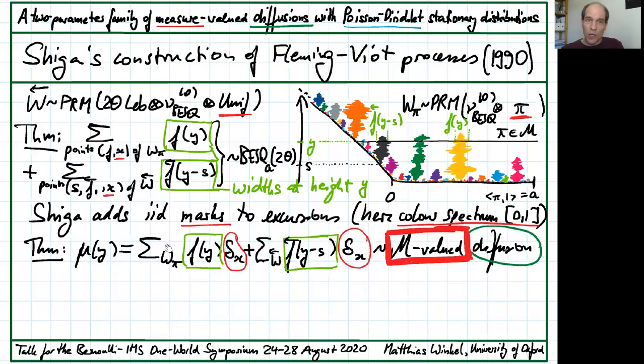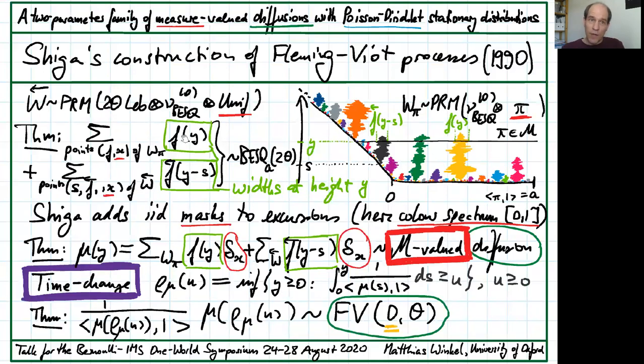Shiga records this extra structure in a measure-valued process by using the spindle widths as atom sizes and the color marks as atom locations. What he obtains is a measure-valued branching diffusion. Its total mass fluctuates according to Pitman-Yor squared Bessel processes constructed from those same excursions. To obtain the Fleming-Viot process, Shiga first introduced the Lamperti-style time change based on the total mass and then normalized to unit total mass. The process is the same Fleming-Viot 0-theta process for which Ethier and Kurtz established Poisson-Dirichlet stationary distributions.